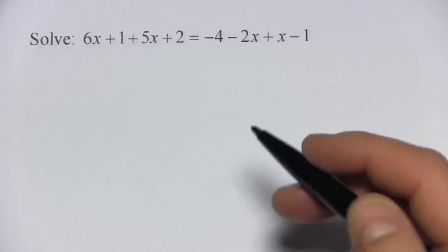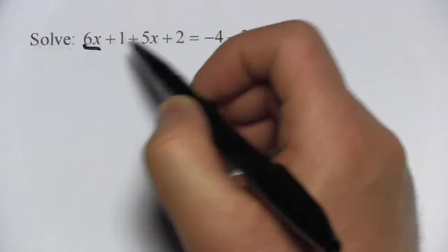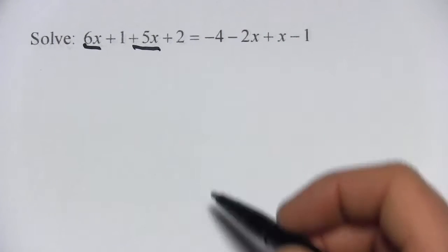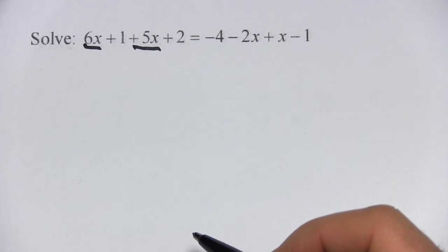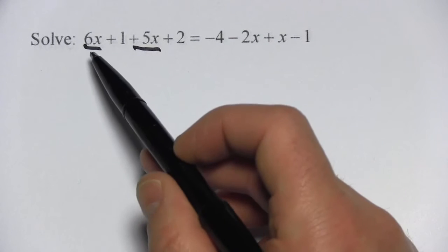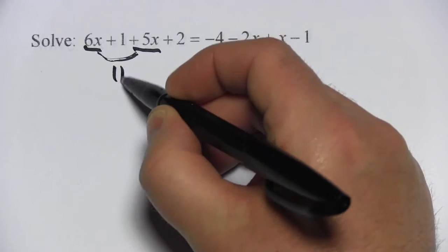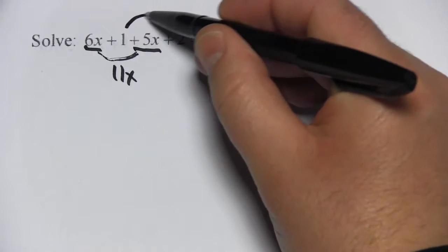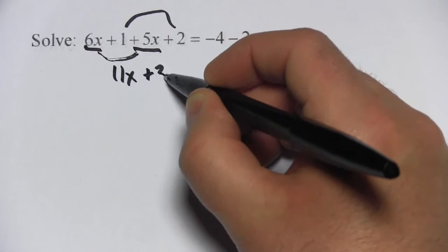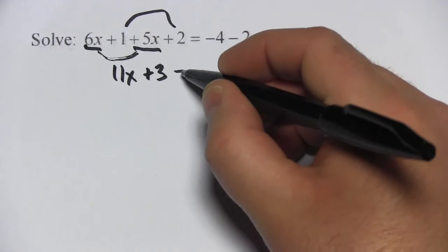We're going to look on each side of the equation for terms that have the same letters. So here we have 6x, here we have 5x, those are like terms. And also the 1 and the 2 are like terms. If we combine 6x plus 5x, that's going to be 11x and 1 plus 2 is 3. So that side simplifies to 11x plus 3.